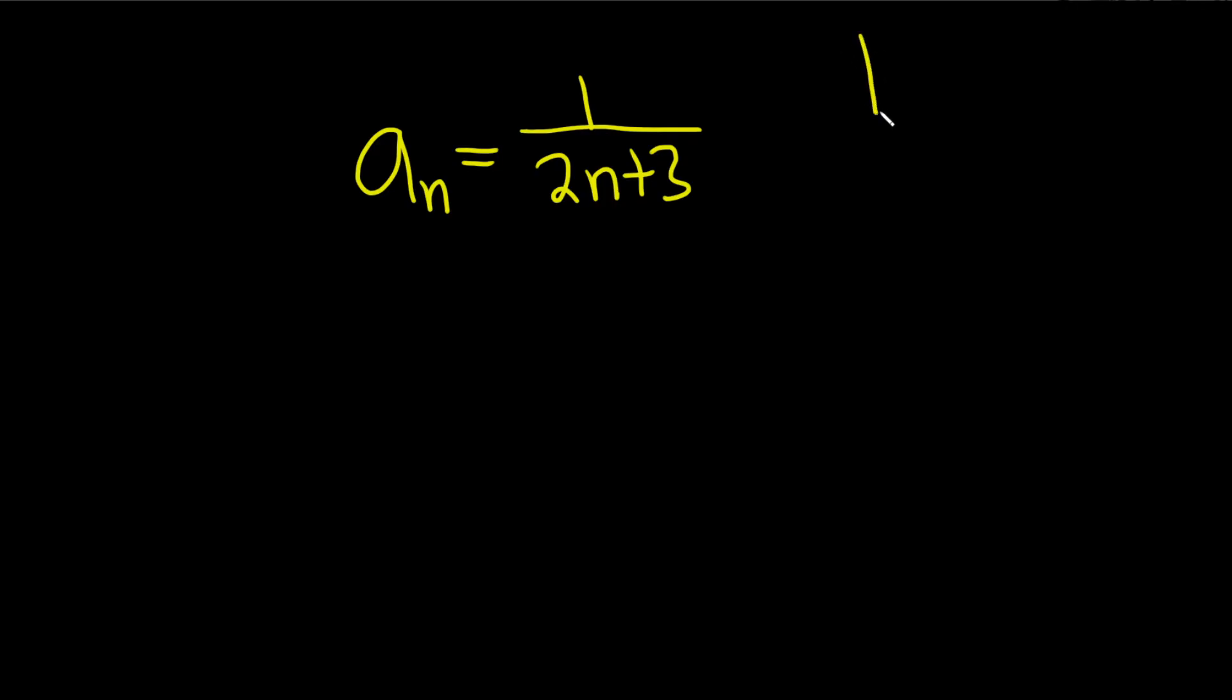So a sequence a sub n is bounded if whenever you take the absolute value of a sub n, it's less than or equal to M and this is true for all n greater than or equal to 1 where n is an integer.